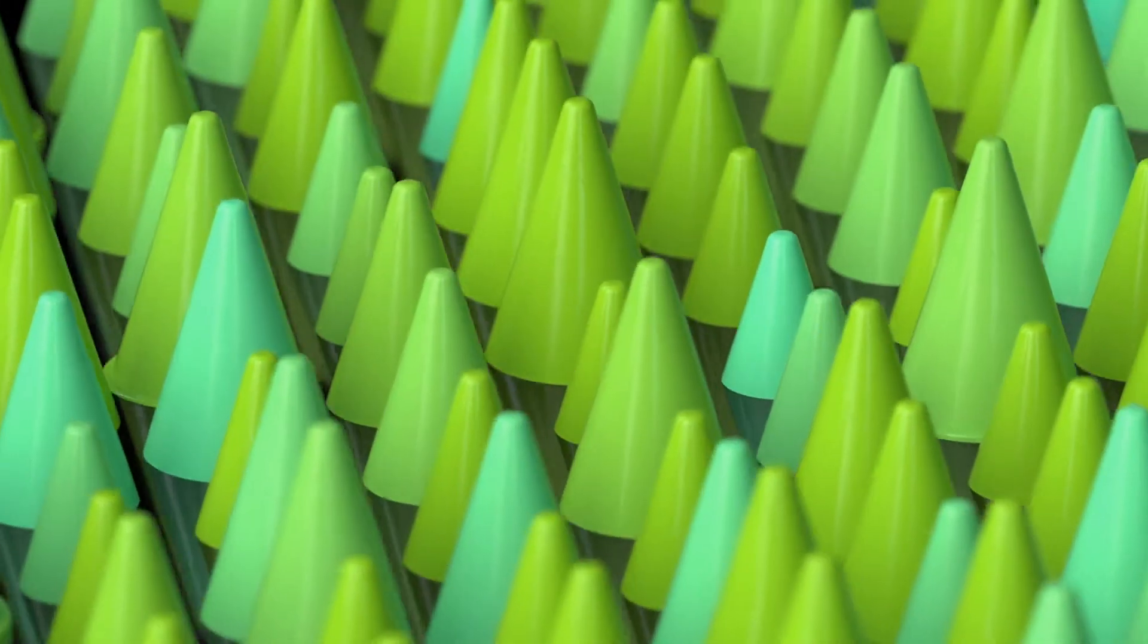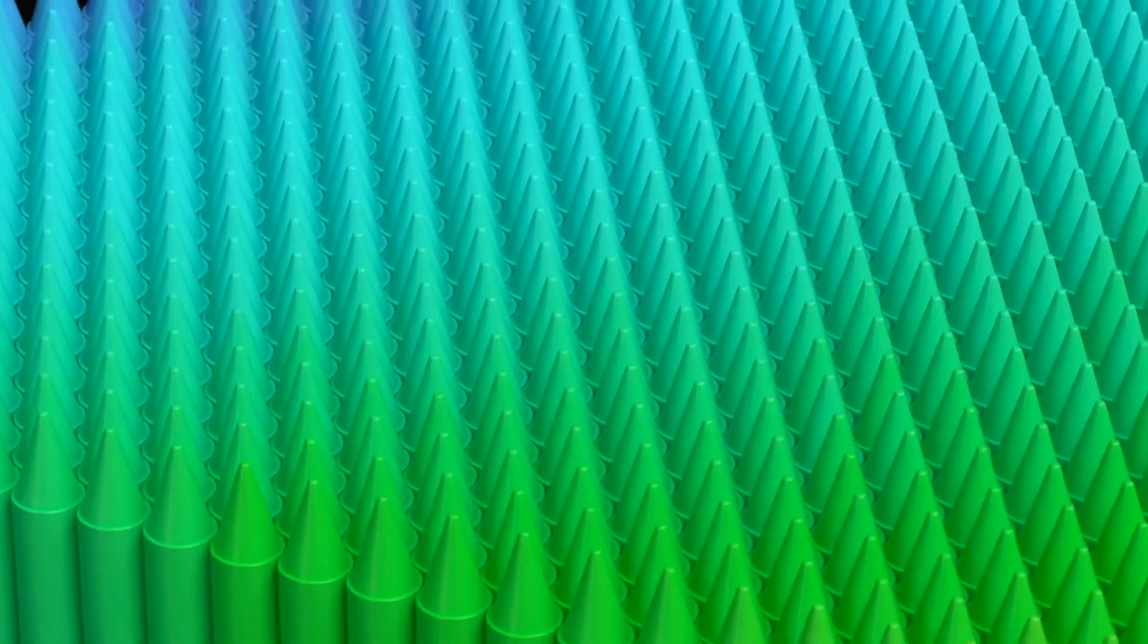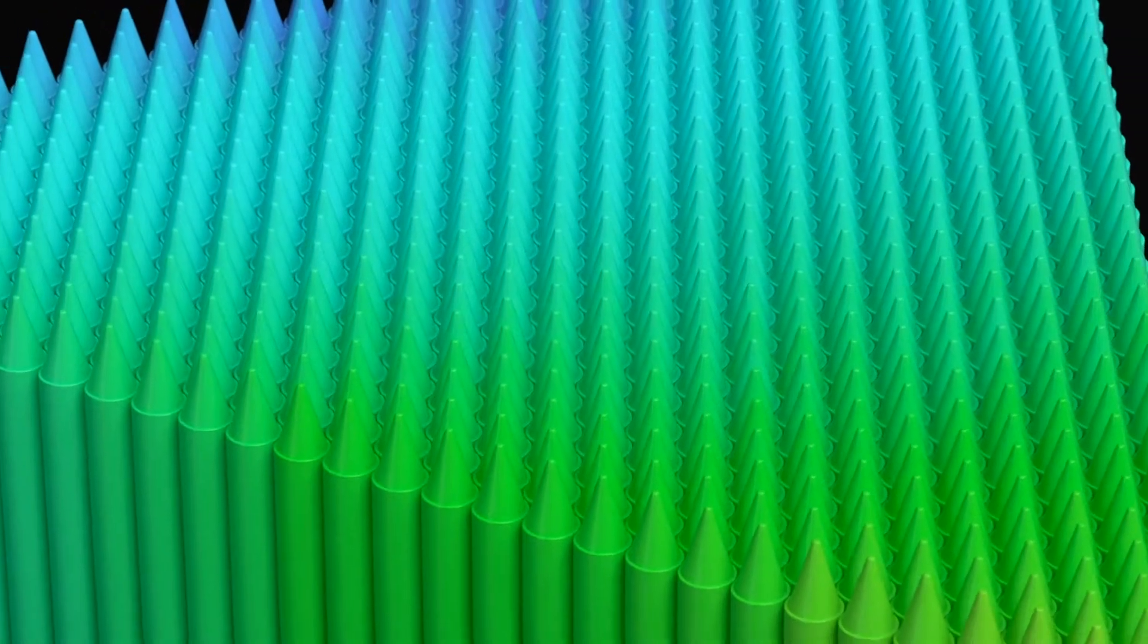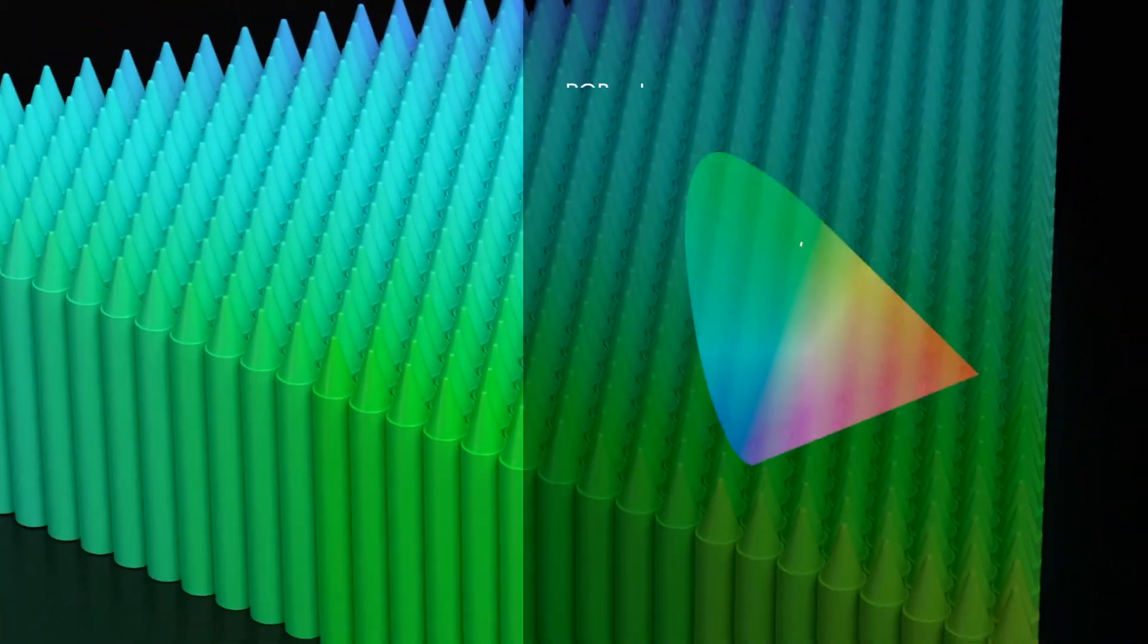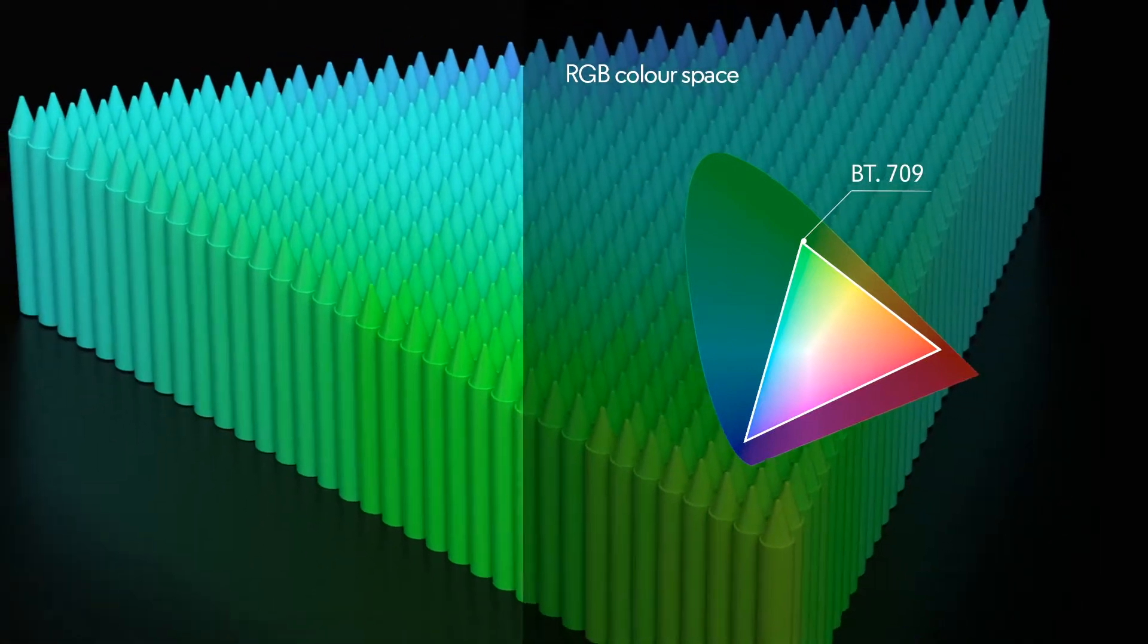So how does an EIZO ColorEdge compare? Most other monitors can only give you a limited range of colours. High definition monitors output the colour space, known technically as BT709.